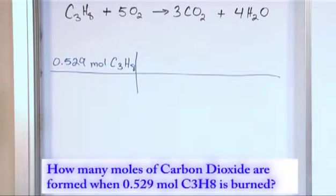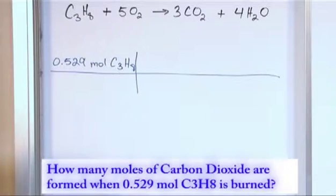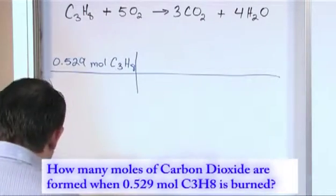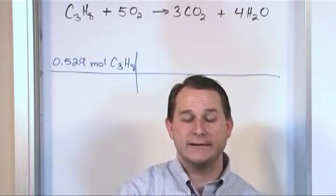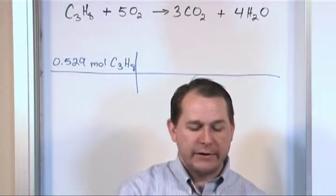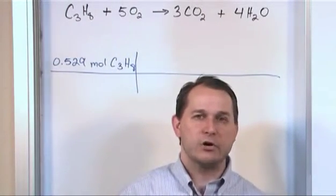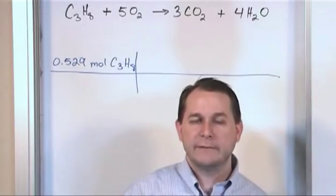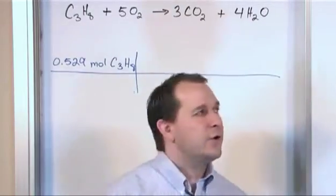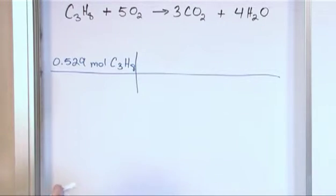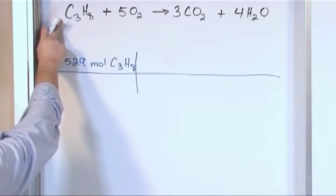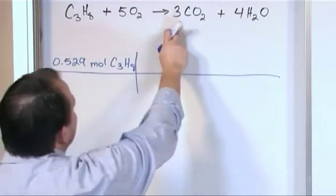This is one of the first things I taught you in chemistry and this is why it's so important. We need to come up with a conversion factor. What we're trying to end up with is moles of carbon dioxide. We need to know how moles of carbon dioxide are related to moles of propane, because that's what we started with. We get that relationship from the reaction: for every one mole of propane, we get three moles of carbon dioxide.